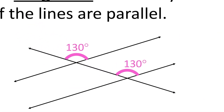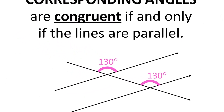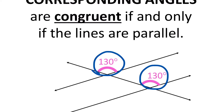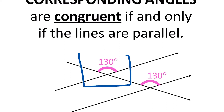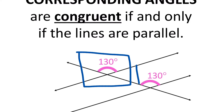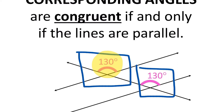The first one we're going to look at is corresponding angles, which are two angles that are in relatively the same spot. If you look at these two angles, they're in the same general location. How I like to think about this is — see how here is an X, right here there's an X, and there's another X down here. These two angles are in the same relative location, meaning they're both right here in the top middle. So they are corresponding angles.